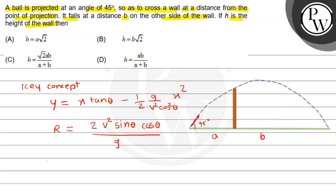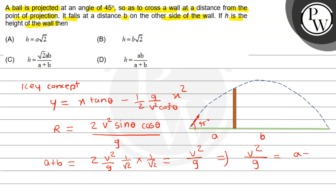Range आएगी total A plus B, that is equal to 2v² divided by g. अब sin θ cos θ के जगह हम angle 45 degree place करके 1/√2 × 1/√2 लिख सकते हैं. तो यहां से range: A plus B is equal to v² divided by g. तो v² divided by g is equal to A plus B. हम इसे बाद में use करेंगे.